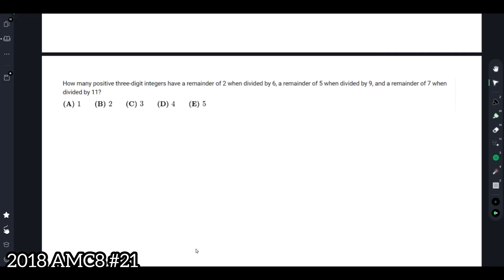Hey guys, today we'll be working on the 2018 AMC 8 Problem 21. How many positive three-digit integers have a remainder of 2 when divided by 6, a remainder of 5 when divided by 9, and a remainder of 7 when divided by 11?